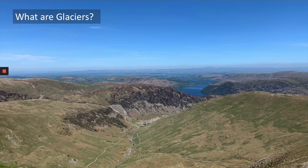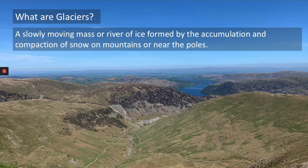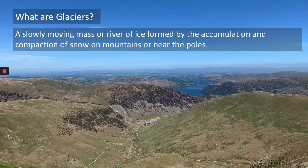So let's have a look at the definition of what a glacier is. A glacier is a slow moving mass or river of ice formed by the accumulation and compaction of snow on mountains or near the poles. So in the Lake District we're not near the poles, we're up in the mountains. So that's how the ice can form here. We're at high altitude so snow can fall here.